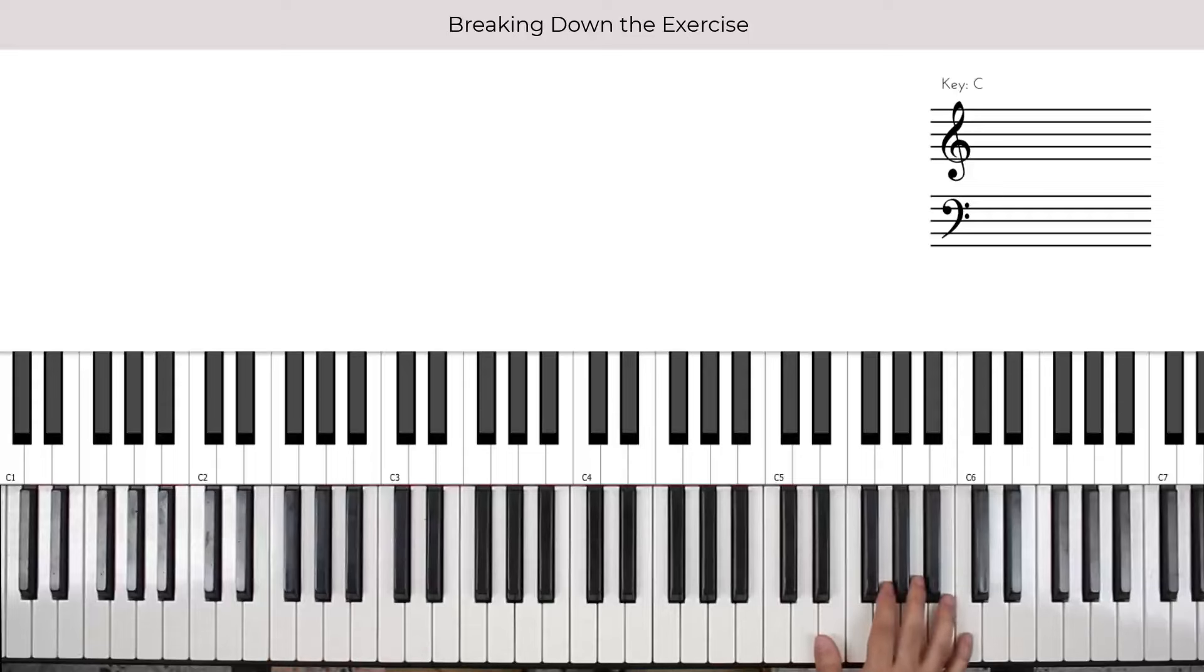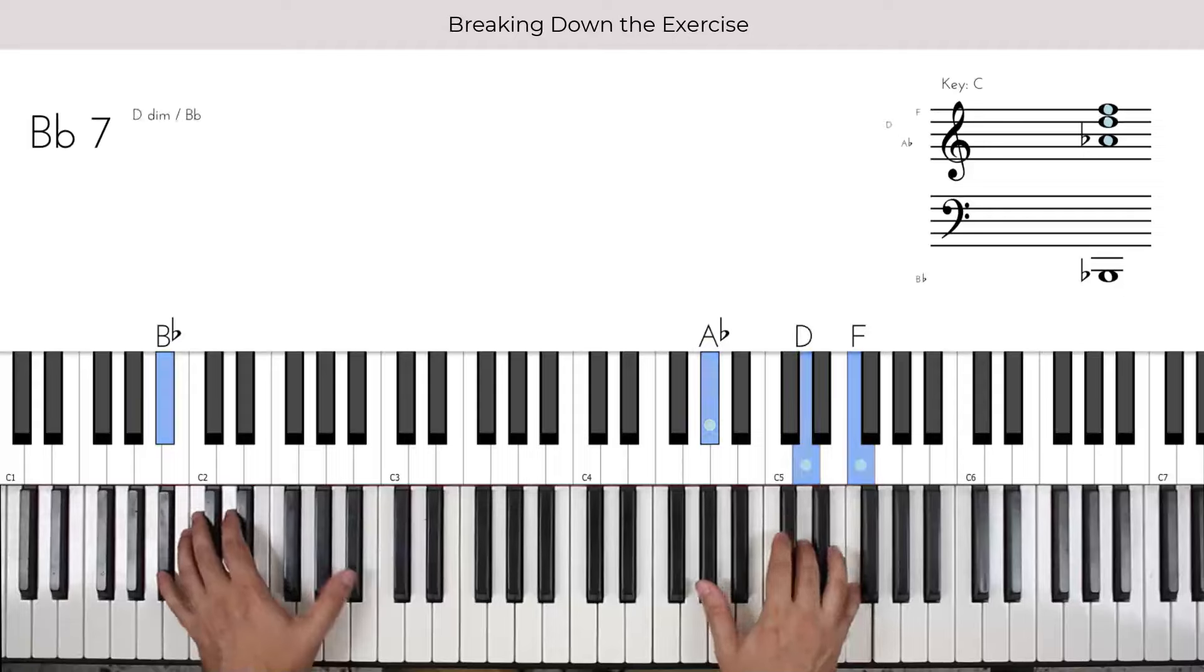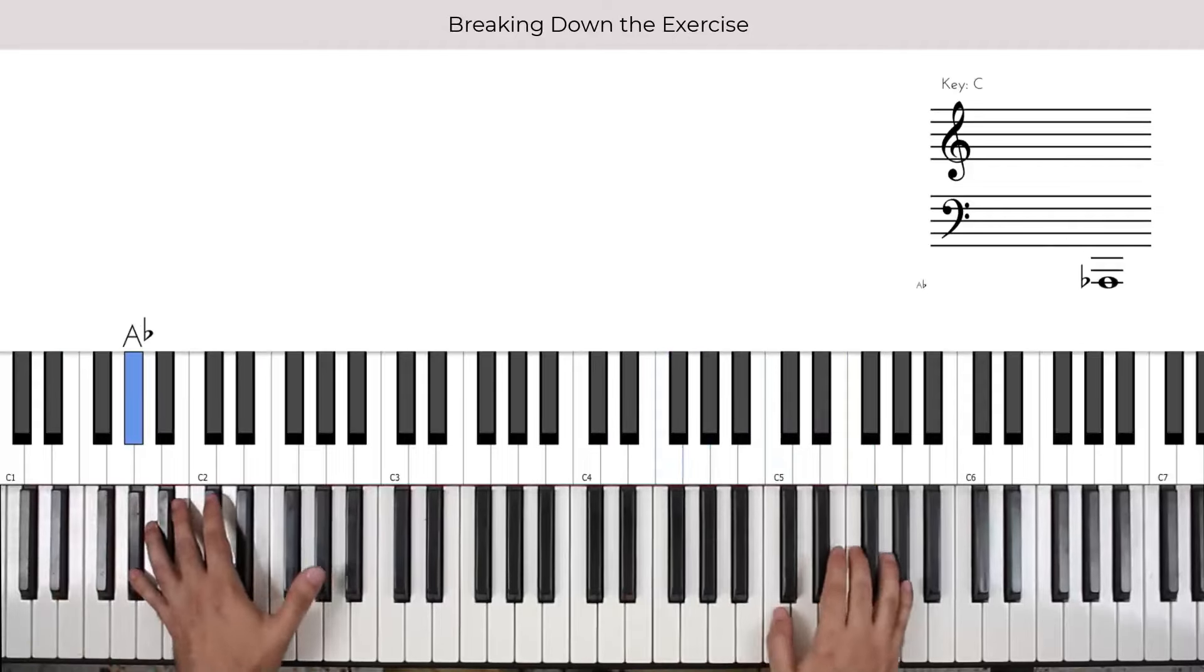So this is the exercise in a nutshell. You can make it a little bit more interesting. Maybe if you add a little bit of rhythm in the right hand. Again, really up to you. Don't start out if it's too complicated like that. But, you know, something like this. Okay, so you have an exercise for practicing the circle of fifths.